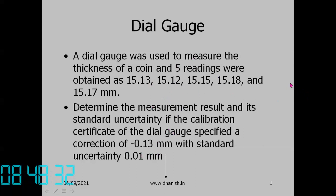What is the first step? The measurement is the thickness of the coin. In textbook problems it is easy — the sources of uncertainty are the repeated readings and the calibration uncertainty of the dial gauge. The mathematical model is: thickness of coin equals the average reading plus the correction. So reading plus correction is the mathematical model.